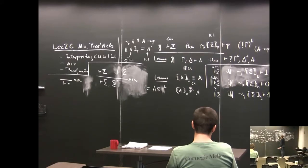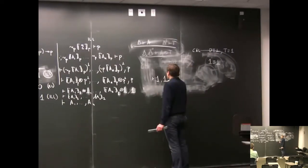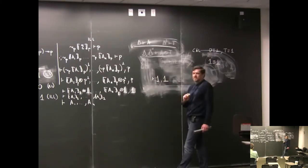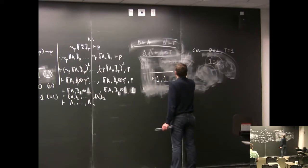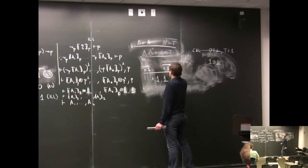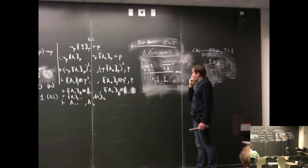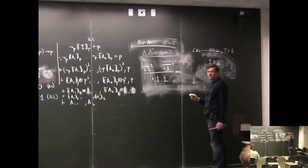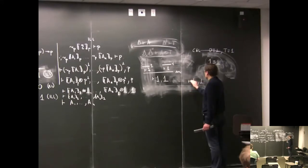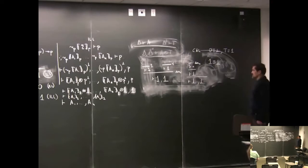Let's see if those rules give us 1 equals bottom. If we have 1 and try to prove bottom, in classical logic the negation of bottom is 1, so we have to prove 1, 1. We use mix2: we have to prove 1 and 1 — each by the 1-rule. So 1 implies bottom. For the other direction, bottom implies 1: the negation of 1 is bottom. We use the bottom rule, then the bottom rule again, then mix0. So indeed, if you have those two rules, then 1 equals bottom.